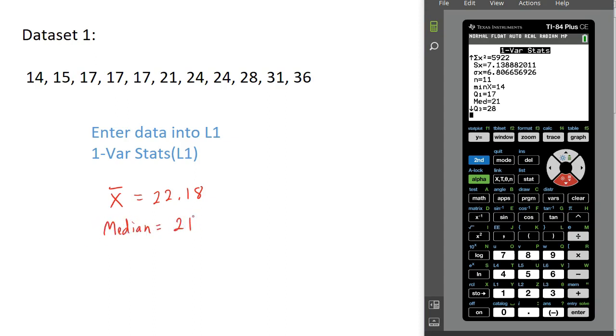Your calculator doesn't give you the mode, but we can tell by looking at our list of data that there are three instances of 17. So our mode is 17. There's mean, median, and mode of our first dataset.